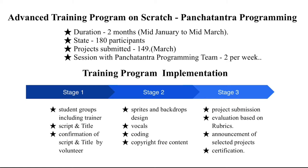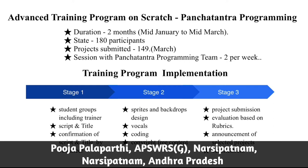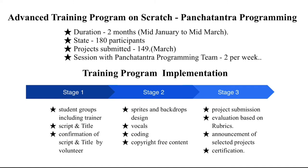There are different stages in implementing this program. In the first stage, students have to write their own script with dialogues and form a team with the trainer. After getting confirmation from Panchatandra programming volunteers about the script and title, students can start work on their projects. In stage 2, students have to design their own sprites and backdrops, record their dialogues, and then do their coding using sprites, backdrops, and vocals.